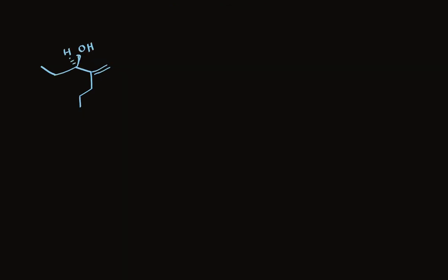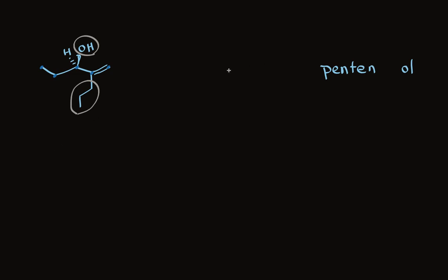Let's look at another example. There are two functional groups: the hydroxyl group and the carbon-carbon double bond — so this is an alkene and an alcohol. The OH is the higher priority functional group. We find the longest chain containing both functional groups: it's five carbons long, making this a pentenol. Remember, the higher priority functional group goes at the very end of the name. The double bond is on carbons 1 and 2, so we call that position 1.